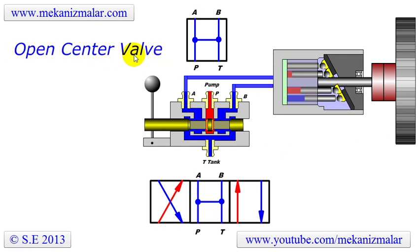This valve has four ports. Port P is connected to a pump which supplies pressurized oil to the valve. Port T is connected to the tank which contains low pressure oil to be pumped to the circuit. Port A and port B are connected to the device to be controlled, in this case a fixed displacement piston motor.